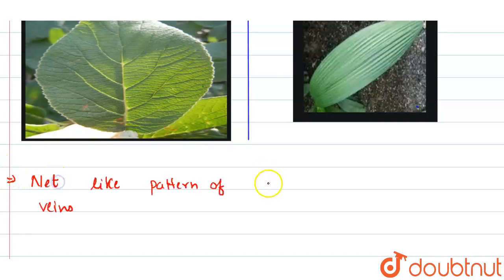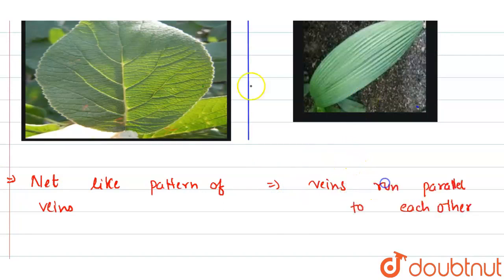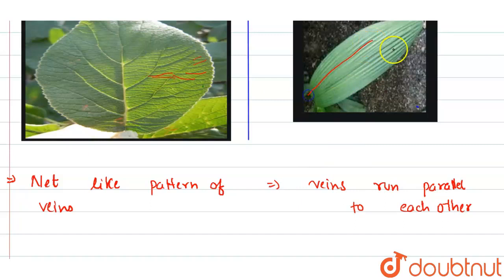In case of parallel venation, the veins run parallel to each other. We can see that in reticulate venation one vein is attached to other veins at several points, whereas in case of parallel venation one vein and the second vein are attached only at the base.